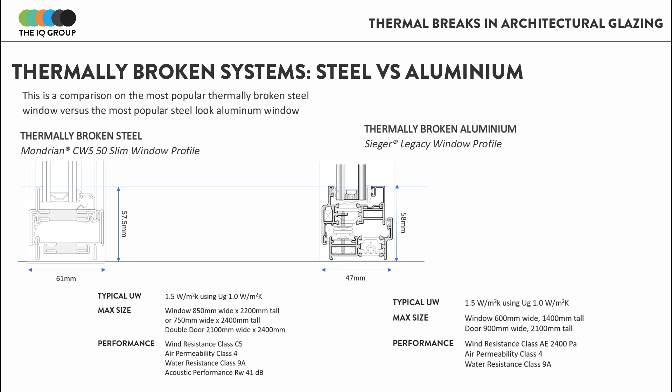Here you can see the Seager Legacy system — the steel-look system from Seager — compared with the Mondrian CWS 50 slim, which is a thermally broken steel solution. You can see that the sightline difference between these two steel and aluminium systems is very small.